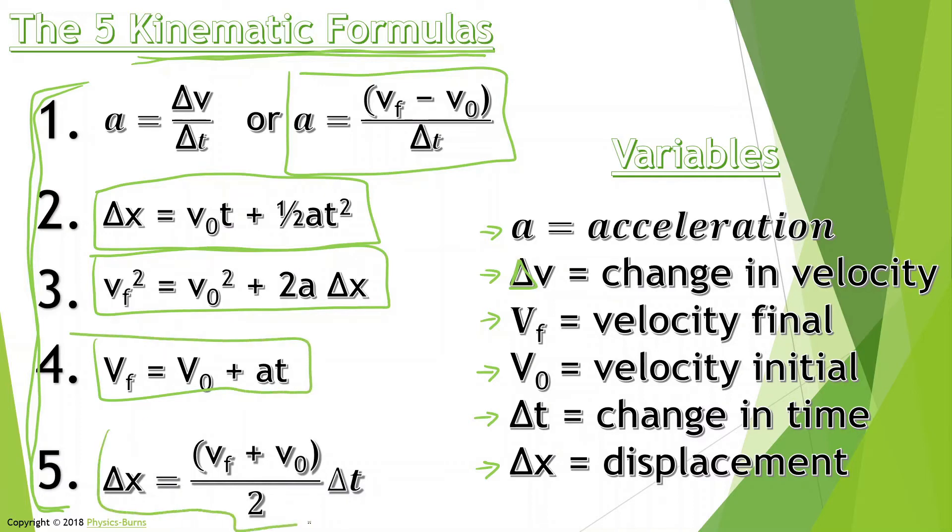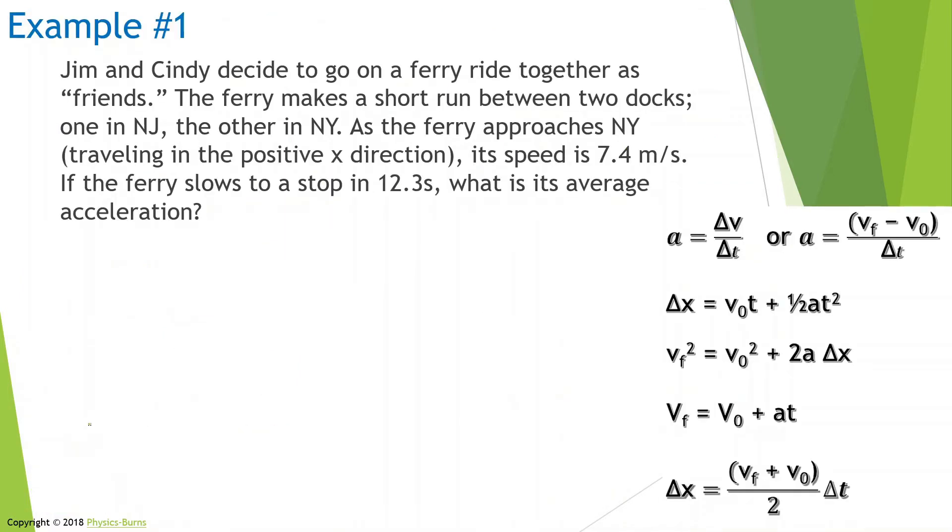Let's look at the first example. This is an average example, a pretty good example of how to use what we just talked about. Jim and Cindy decide to go on a ferry ride together as friends. The ferry makes a short run between two docks, one in New Jersey, the other in New York. As the ferry approaches New York traveling in the positive x direction, its speed is 7.4 meters per second. If the ferry slows to a stop in 12.3 seconds, what is its average acceleration?